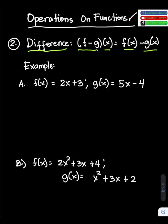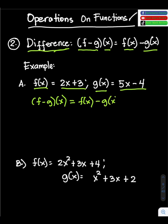So if we have, for example, f of x equals 2x plus 3 and g of x equals 5x minus 4, find the difference of the given functions. In formula, we have quantity of f minus g times x equals f of x minus g of x.